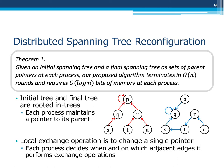This is our main result. Given an initial spanning tree and a final spanning tree as rooted trees, our proposed distributed spanning tree reconfiguration algorithm terminates in O(n) rounds and requires O(log n) bits of memory at each process. Local exchange operation is to change a single pointer. We will show that orientation of a spanning tree helps each process decide when and on which adjacent edges it performs exchange operations.